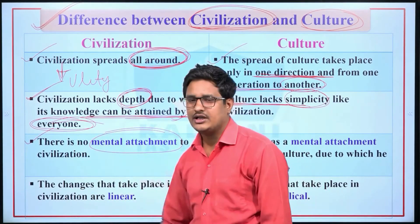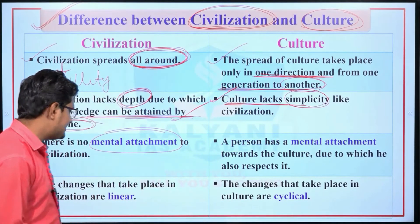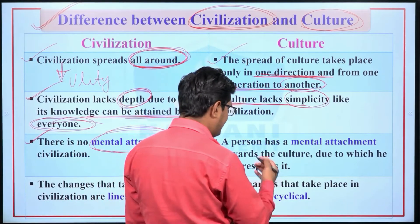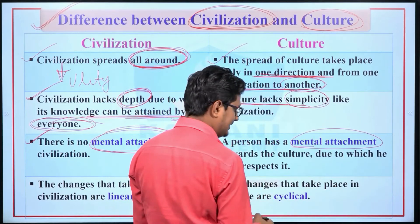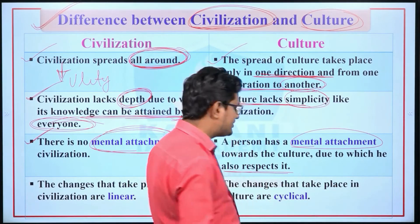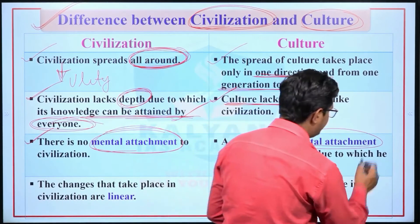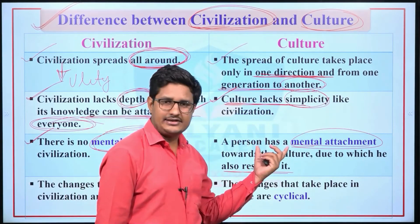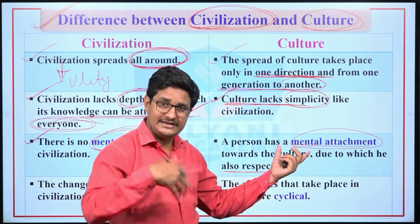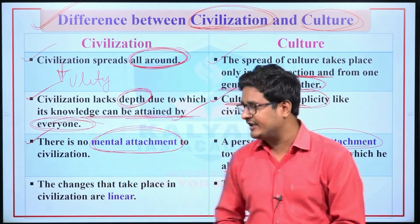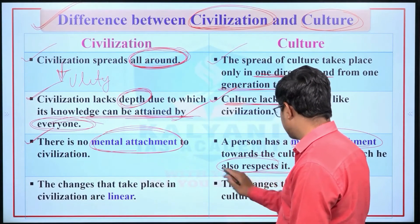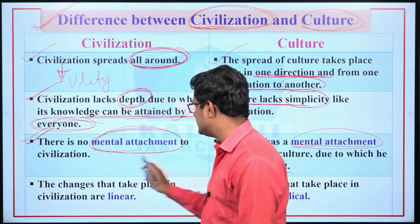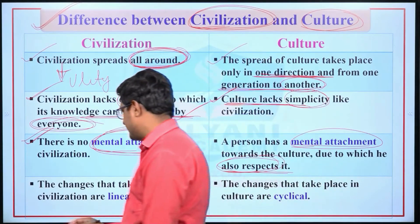Third difference: there is no mental attachment to civilization. There is no mental attachment in civilization, whereas a person has mental attachment toward culture, due to which he also respects it. Because culture is related with our philosophy, thinking, ideology, mindset, and religion — that is why we respect culture. Whereas civilization has more of a utility factor, so mental attachment to it is not as strong.